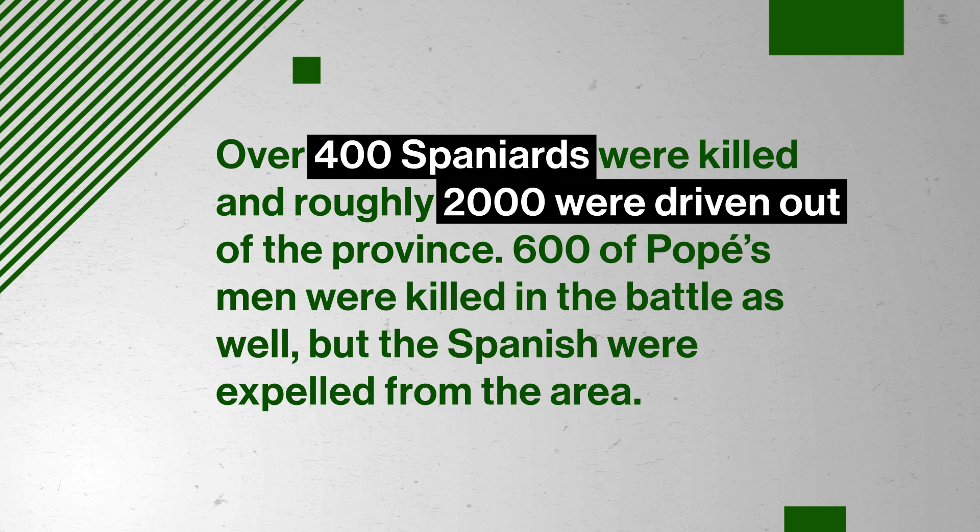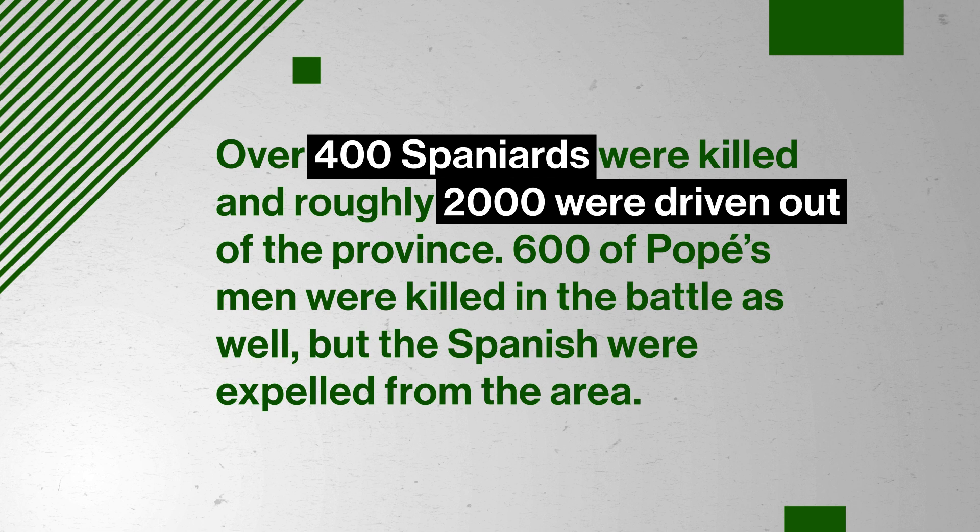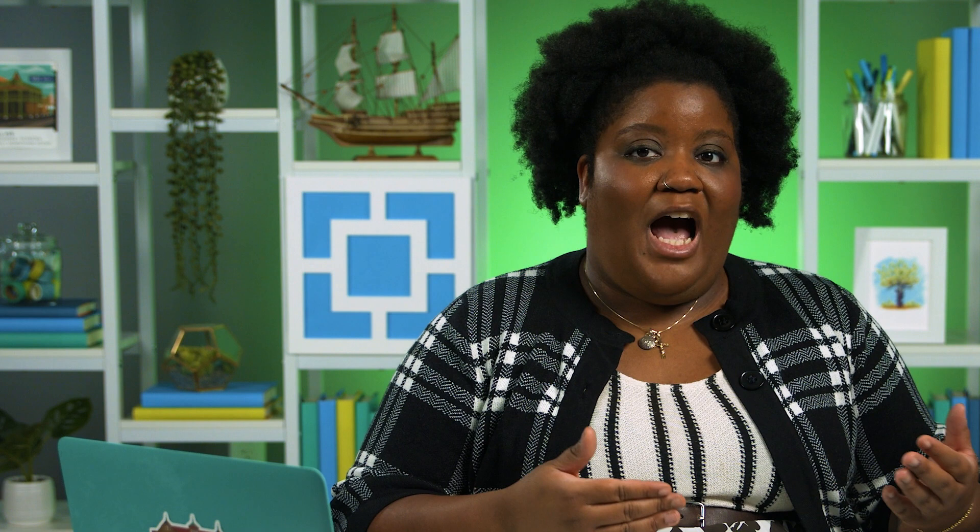In 1680, his plans came to fruition. The Spanish, already stretched thin, could only muster 170 soldiers to face over 2,000 Pueblo, and a massacre ensued. The Pueblo targeted Spanish officials, priests, and settlers. Over 400 Spaniards were killed and roughly 2,000 were driven out of the province. 600 of Pope's men were killed in the battle as well, but the Spanish were expelled from the area. They eventually retook the area, but not for another 12 years. After the Spanish were driven off, Pope and the Pueblo destroyed any remnants of Spanish civilization, including livestock and food. Pope was not their official leader — they relied on self-government. However, after subsequent droughts and raids by the Apache, Utes, and Comanche, Pope fell completely out of favor with the Pueblo. Eventually, the Spanish reclaimed many villages with promises of leniency and a less severe regime, though some villages remained free of Spanish control ever after.